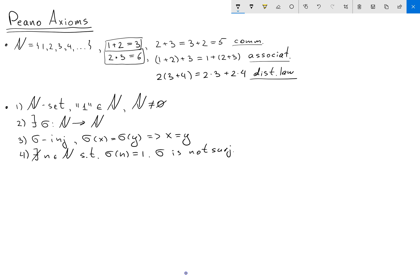And the last axiom, the most important one, is called induction. So basically I'm saying if I have a subset S which is a subset of N and for this subset I have the following properties: first, 1 belongs to S, and I know that for every element n which belongs to S I have that sigma of n also belongs to S, then by using these two properties I can conclude that my S is actually equal to N.